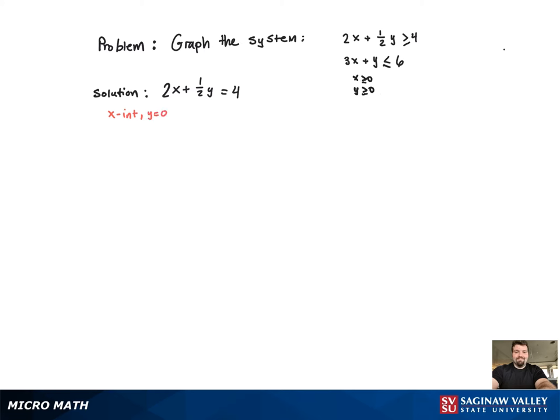For convenience, we're going to find the x and y intercepts starting with the x intercept. So we're going to plug 0 in for y. We get x equal to 2, which corresponds to the point (2, 0).